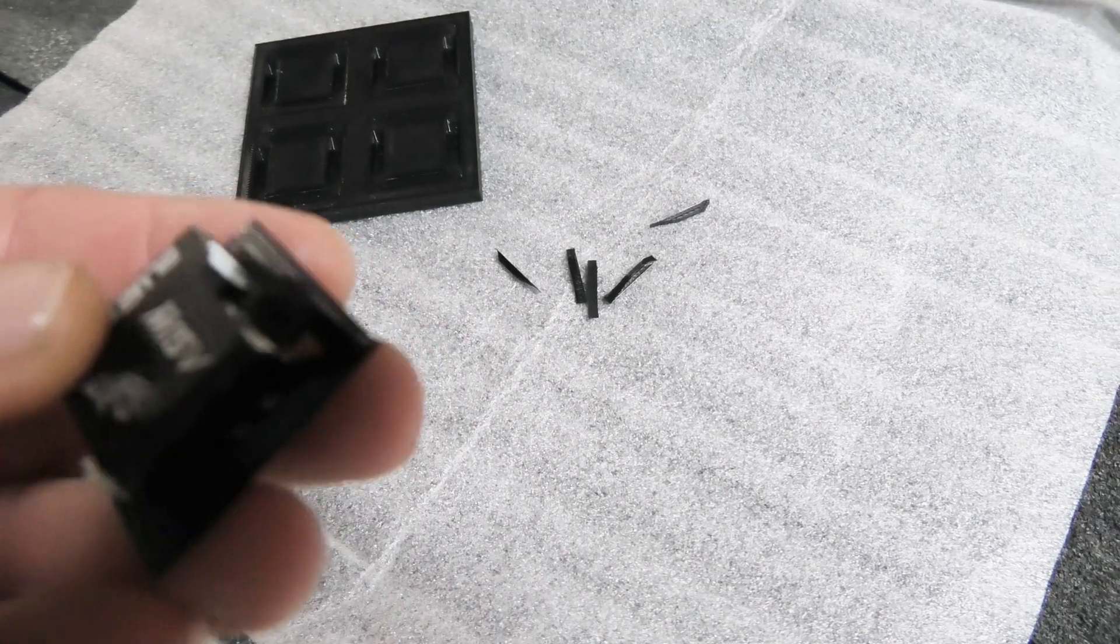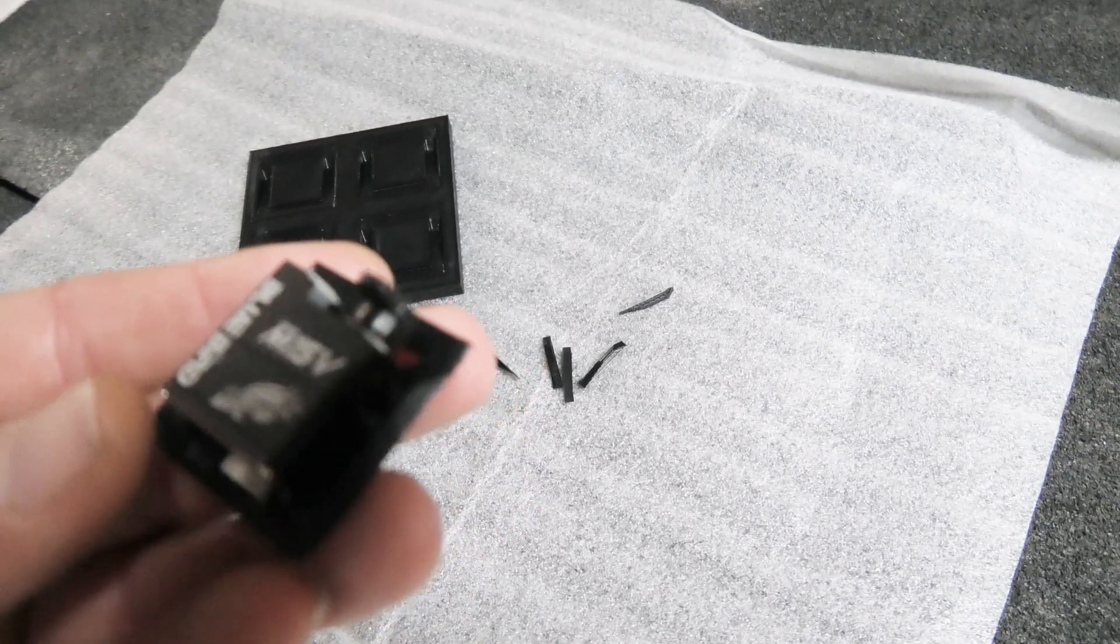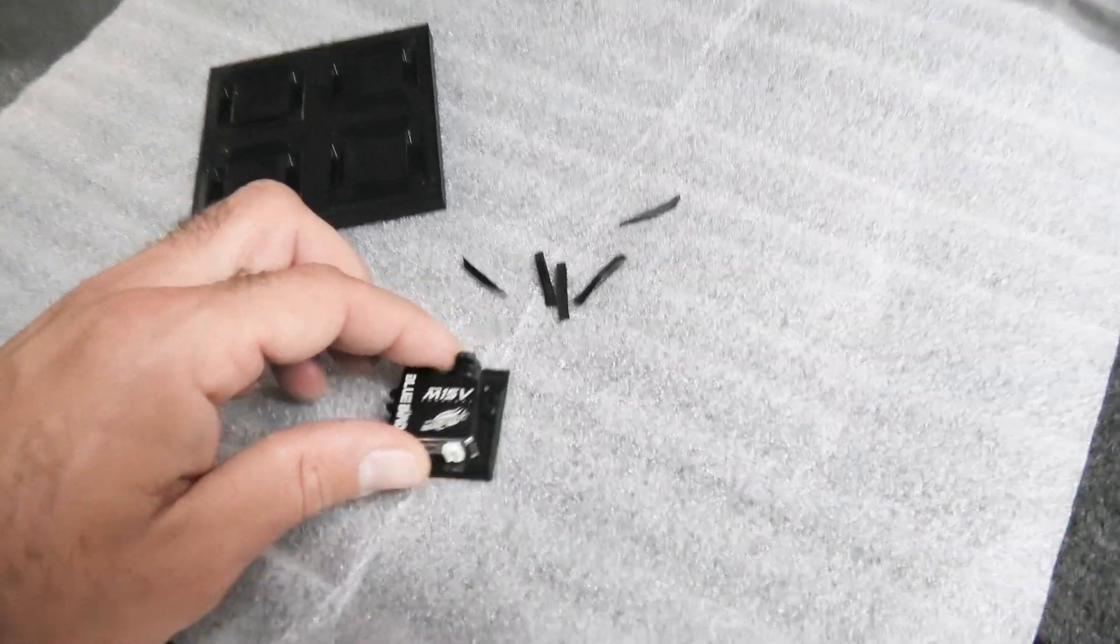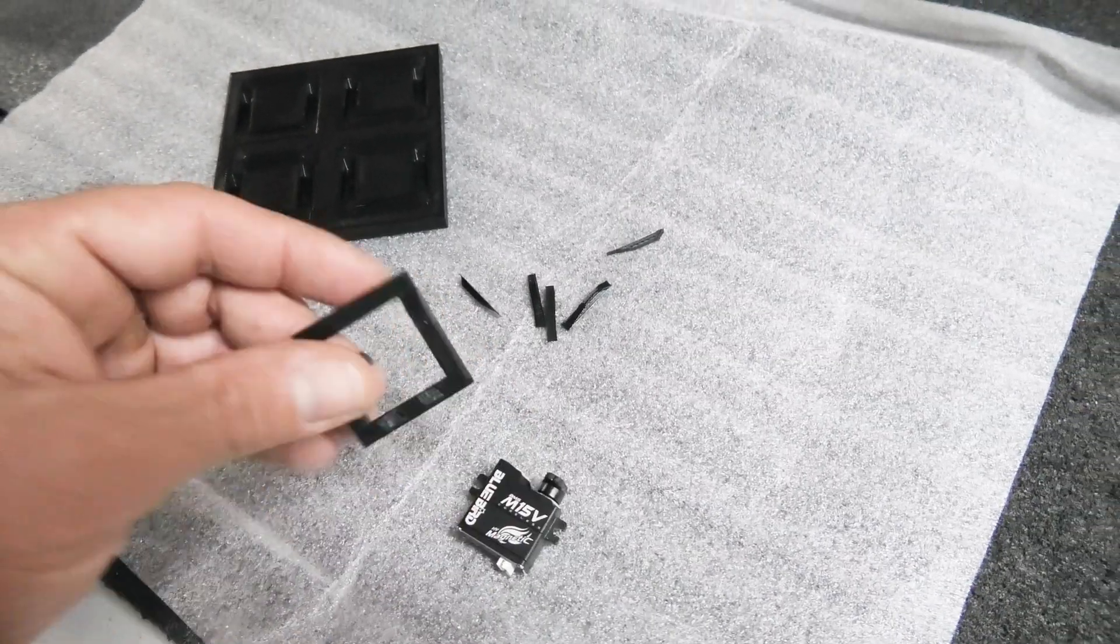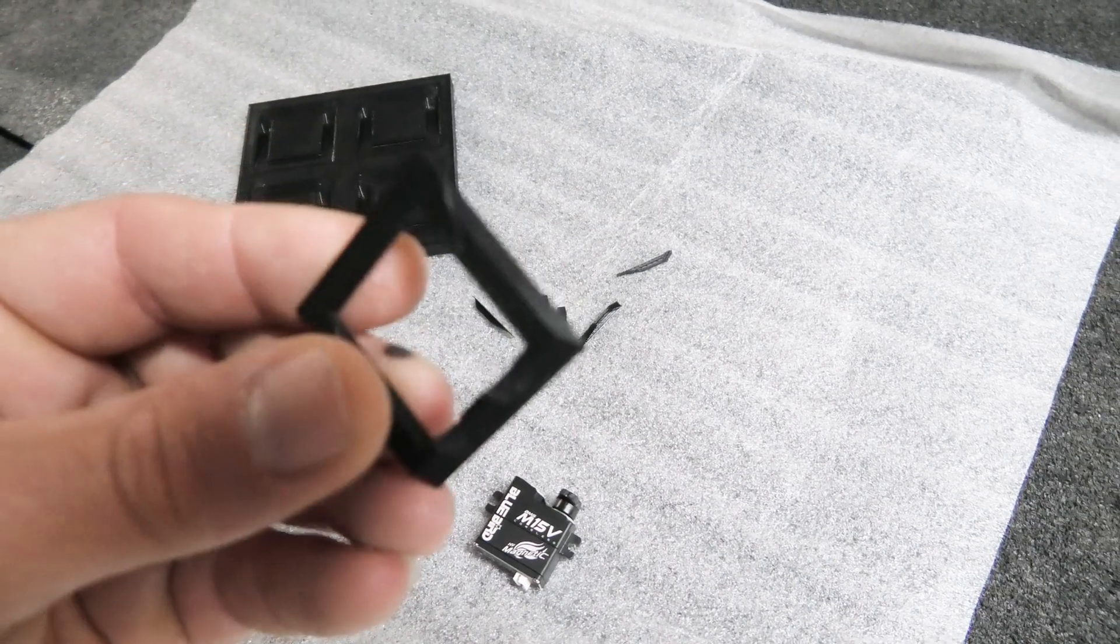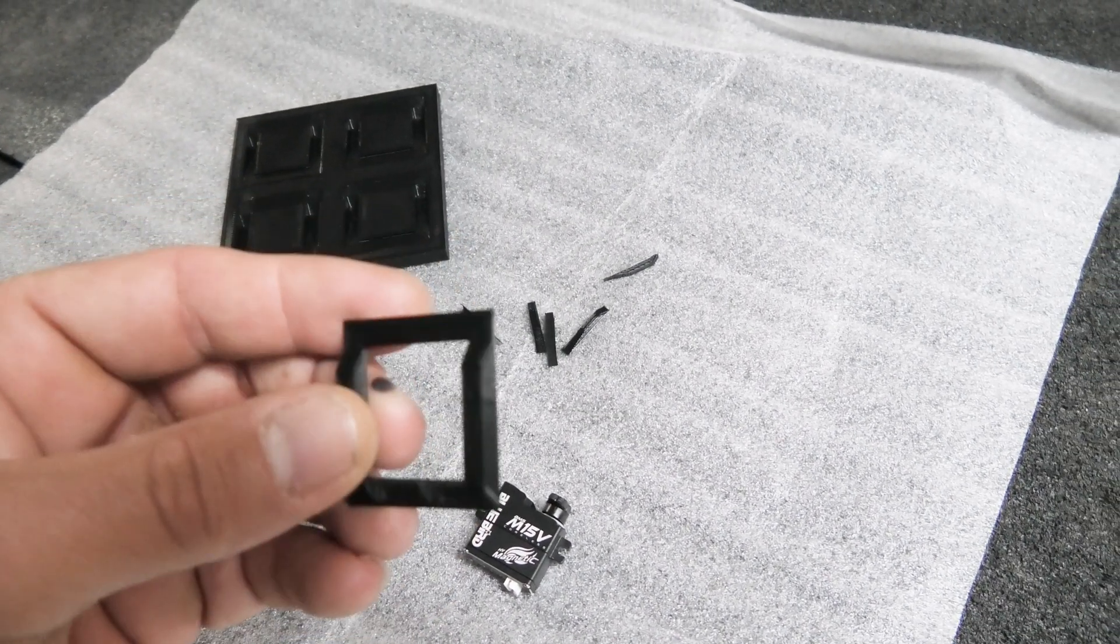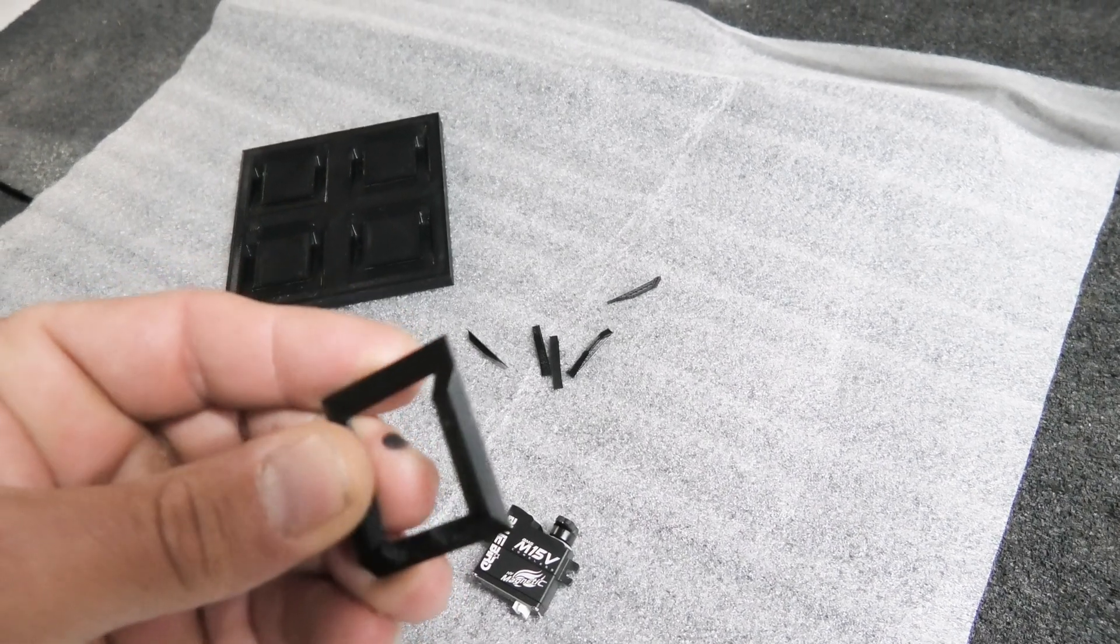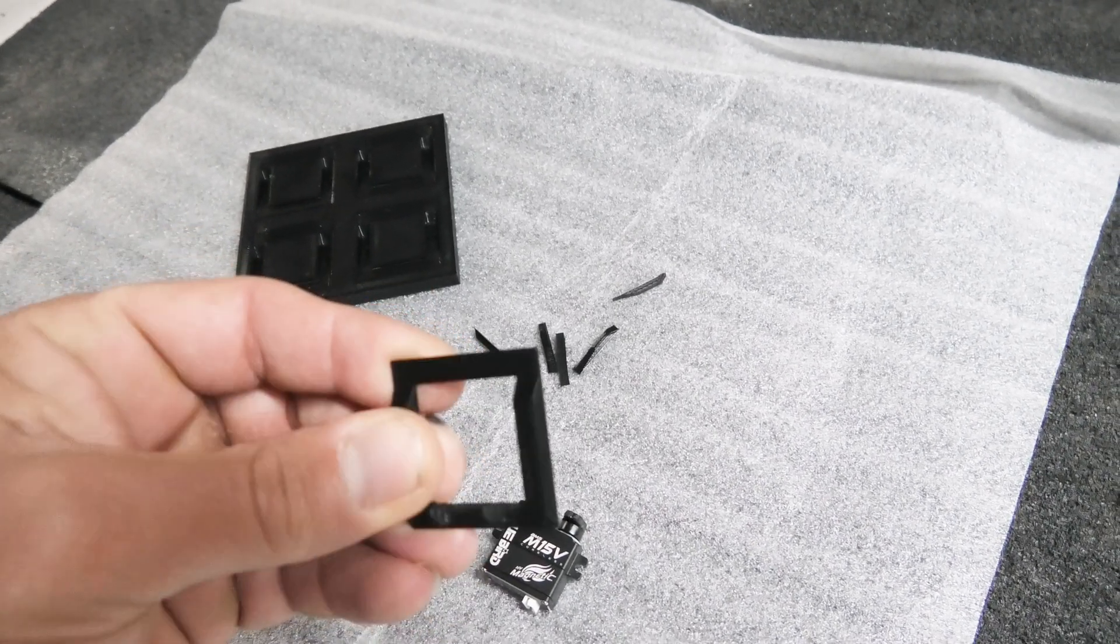I need to make some servo frames for these Bluebird M15s, and I don't want to 3D print them because these are going into a couple of F5J planes, and I want them to be as reliable and durable as possible.